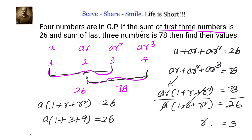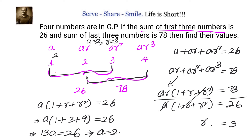Once we have a = 2 and r = 3, the four numbers a, ar, ar², ar³ are: the first number is 2, the second is 2 × 3 = 6, the third is 6 × 3 = 18, and the fourth is 18 × 3 = 54. So the four numbers are 2, 6, 18, and 54.